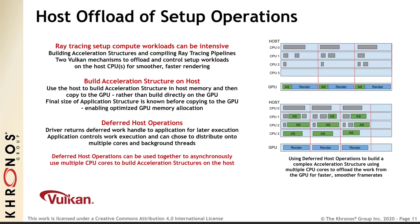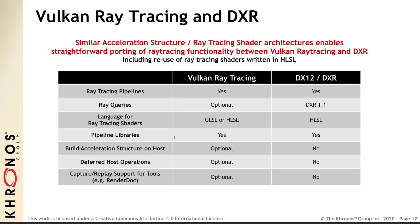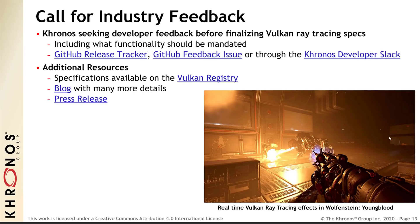Here's a comparison of Vulkan ray tracing and DXR. Both have a ray tracing pipeline. Ray queries are optional in Vulkan but require DXR 1.1 in the case of DirectX 12. For shading languages, Vulkan supports GLSL or HLSL, while DX12 only supports HLSL. Both have pipeline libraries. Build acceleration structure on host is optional in Vulkan but not available in DXR. Deferred host operations are optional in Vulkan and not in DXR. Capture replay support for tools such as RenderDoc is optional in Vulkan and not available in DXR. So it should be a pretty seamless way to go between the two.